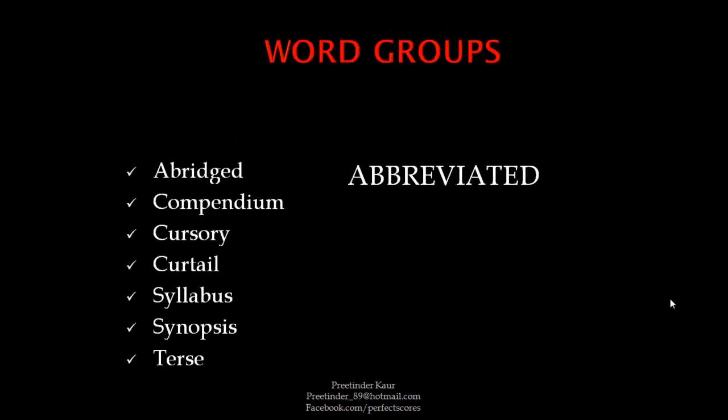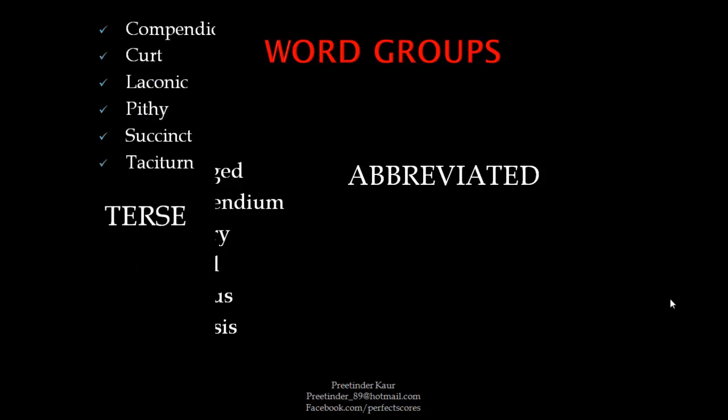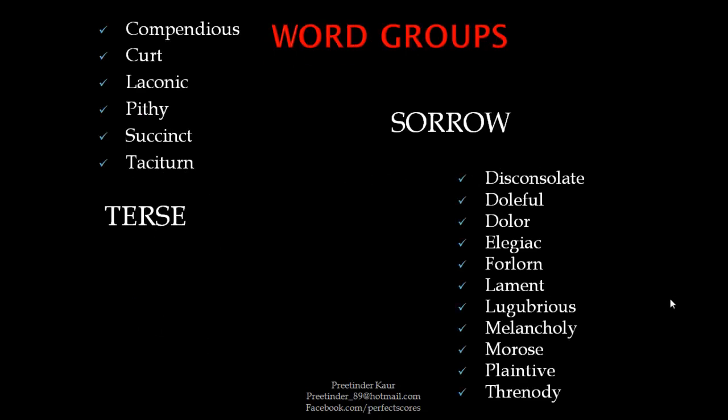The next word group is for abbreviated — when you shorten something: abridged, compendium, cursory, curtail, syllabus, synopsis, and terse. The next related word group is again for terse: compendious, curt, laconic, pithy, succinct, and taciturn.